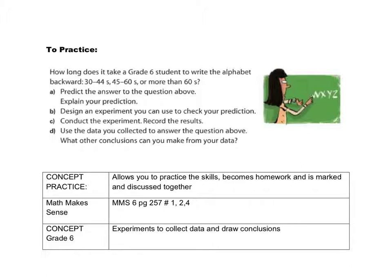Alright. So, to practice with your elbow partner or your group. How long does it take a grade 6 student to write the alphabet backwards? Do you think it's about 30 to 44 seconds? 45 to 60 seconds? Or more than 60 seconds? Predict the answer to the question above. Explain your prediction. Pause and do your prediction now.